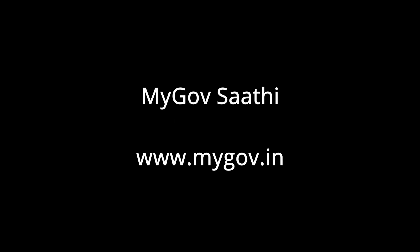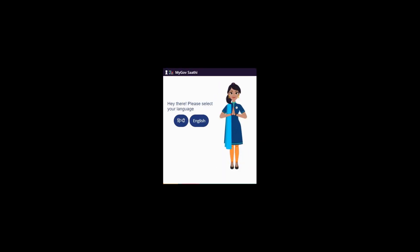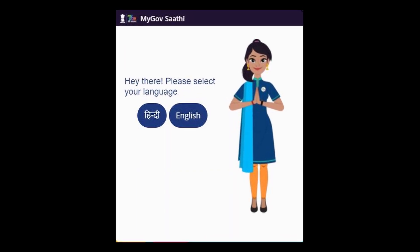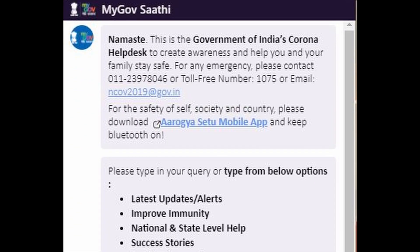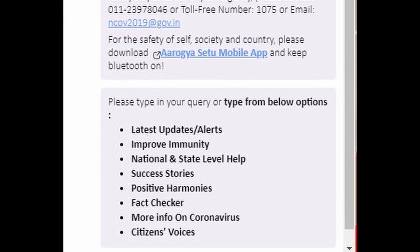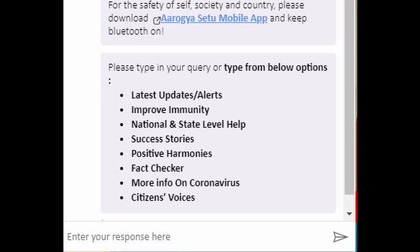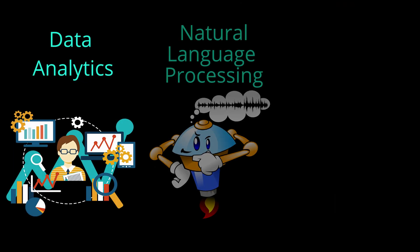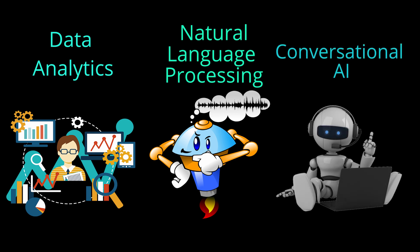MyGovSathi, developed by Microsoft and Accenture in partnership with Government of India's Digital India Corporation, uses AI-enabled chatbots to provide users with accurate, useful, and latest information regarding COVID-19 and can serve up to 300,000 users per day and 20,000 users per minute as reported by Accenture. Sathi makes this possible by combining data analytics, NLP, and conversational AI capabilities.